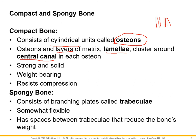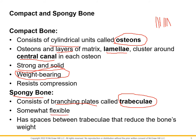Compact bone, because of its osteons, is very strong and solid — used in areas of weight bearing and to resist compression. Spongy bone, on the other hand, has the branching plates called trabeculae, which are a lot more flexible and help reduce the weight of the bone. Birds, for example, have basically shells of compact bone with mainly spongy bone inside to limit weight.